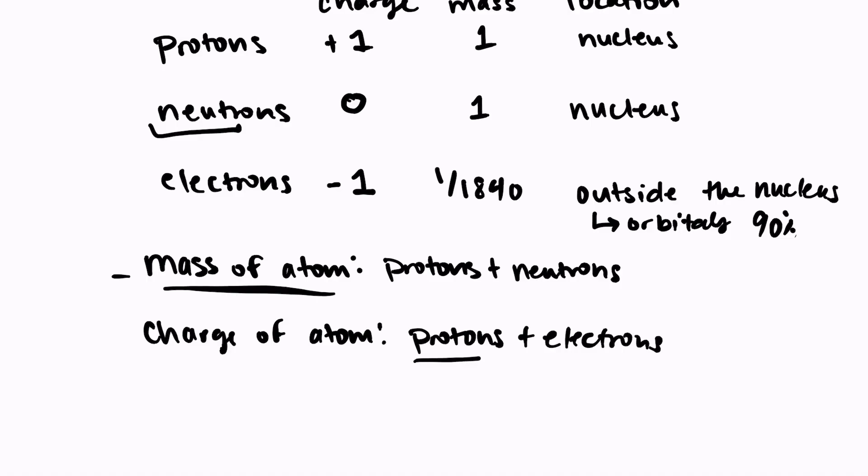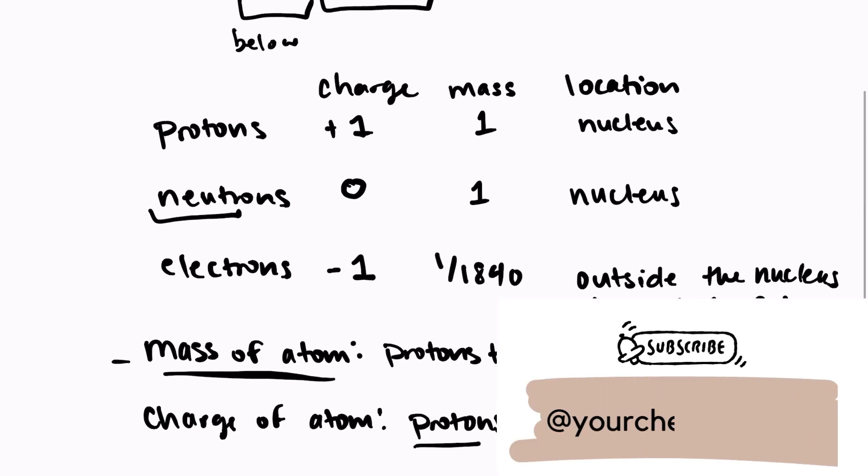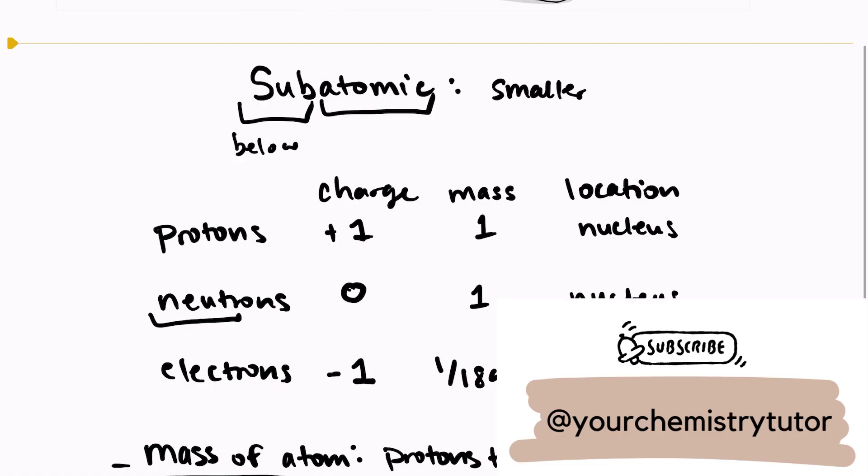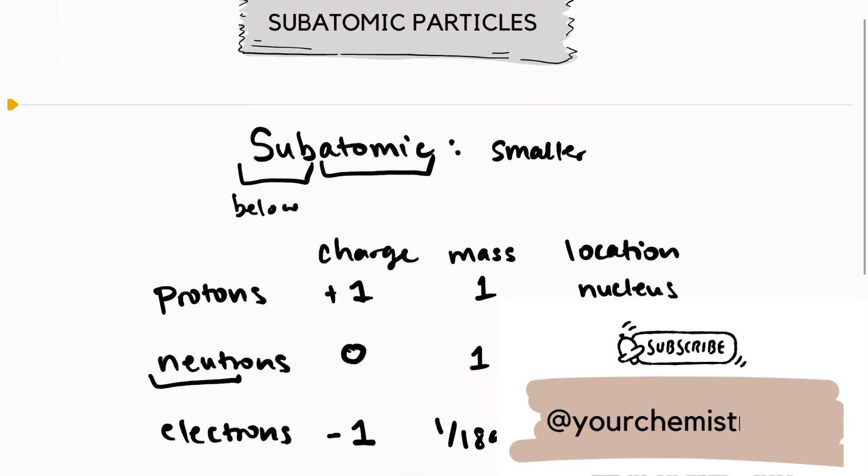If there were more electrons than protons, you would be looking at a negative ion, which is a negatively charged atom. So these are the three subatomic particles that you need to know for chemistry class. Thank you so much for stopping by.